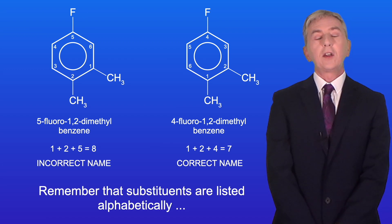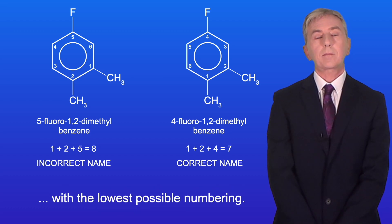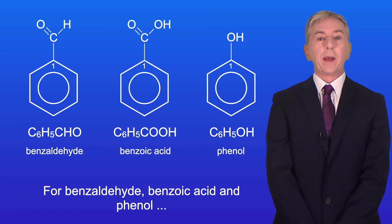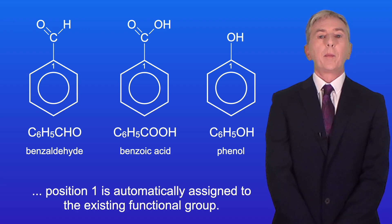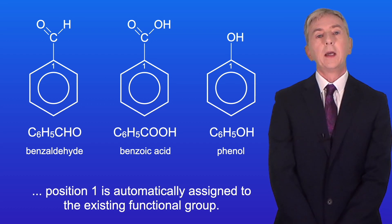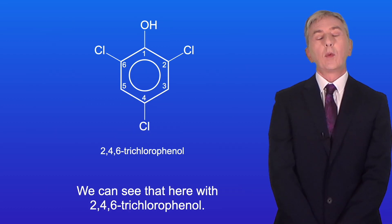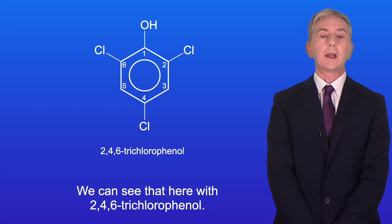For benzaldehyde, benzoic acid, and phenol, position 1 is automatically assigned to the existing functional group, and any other substituents are numbered based on that. We can see this with 2,4,6-trichlorophenol.